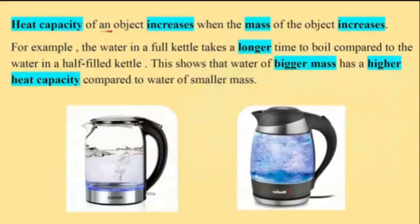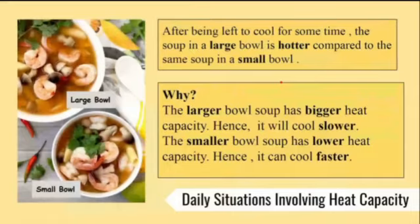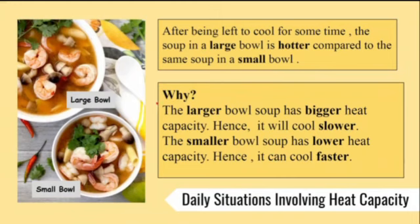Heat capacity of an object increases when the mass of the object increases. For example, a full kettle filled with water takes a longer time to boil compared to a half-filled kettle. This shows that water of bigger mass has a higher heat capacity compared to water of smaller mass. This picture shows two bowls of soup. After being left to cool for some time, the soup in the larger bowl is hotter compared to the same soup in a small bowl. The larger bowl of soup has bigger heat capacity, hence it cools slower. The smaller bowl of soup has lower heat capacity, hence it cools faster.